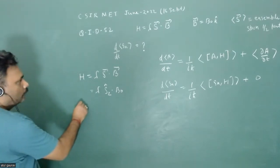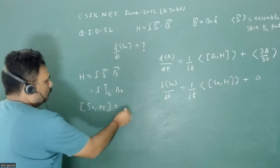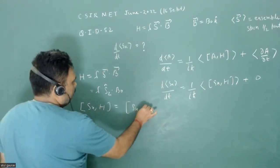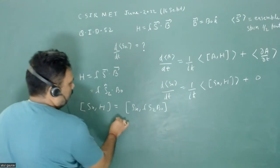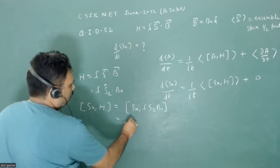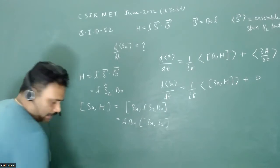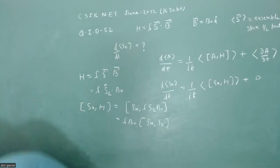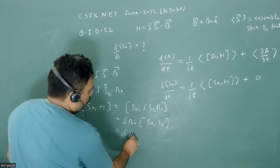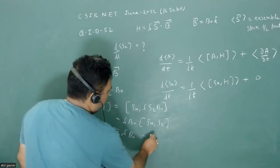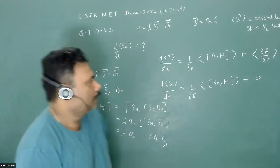And what we want to know, we have to just calculate the commutator of sx and h, which will be sx comma lambda sz b0. And lambda and b0 are constant, so we can take it outside. So we have to calculate sx and sz. The commutator between sx and sz is actually lambda b0 times minus ih bar sy. So this is the commutator. So now we can put it here.